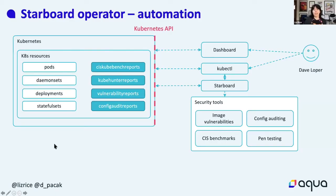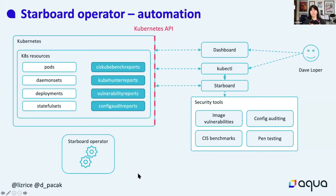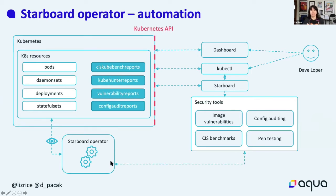The CLI allows our friend Dave to run security tools manually through Kubectl Starboard. The next step is to automate this using an operator. We've created a Starboard operator that currently runs vulnerability scanning on workload resources. The operator watches for new pods starting in the Kubernetes cluster, runs a vulnerability scanning tool, and having run the scan job, writes the vulnerability report custom resource.